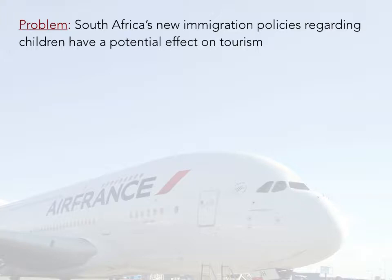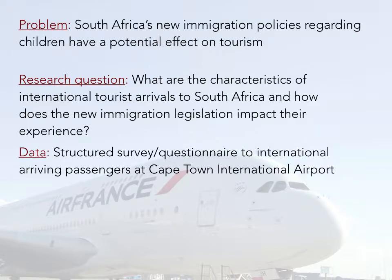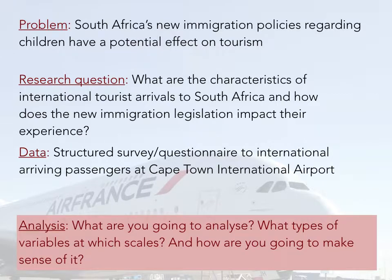So, what's the problem? Well, what we do know is that South Africa's new immigration policies may be having an effect on tourism — those policies regarding tourists who have with them children under 18 years of age. From that problem, we can formulate a research question: we'll look at the characteristics of international tourist arrivals in South Africa and how the new immigration legislation might impact their experience. What kind of data are we going to use? In this case, a structured survey or questionnaire given to arriving passengers at Cape Town International Airport. We're going to analyze that data — different types of variables at different scales — and make sense of it through descriptive statistics.